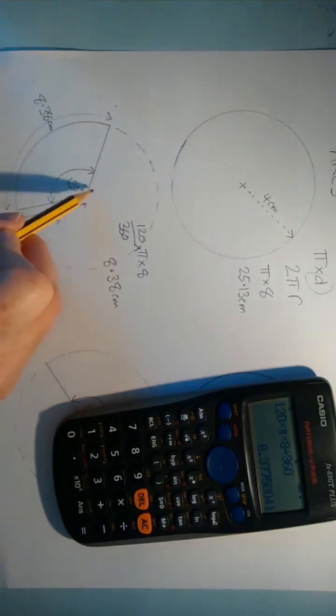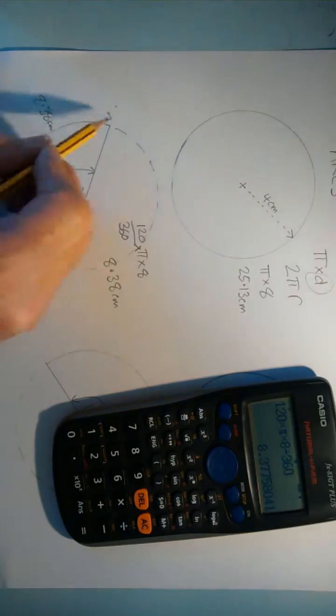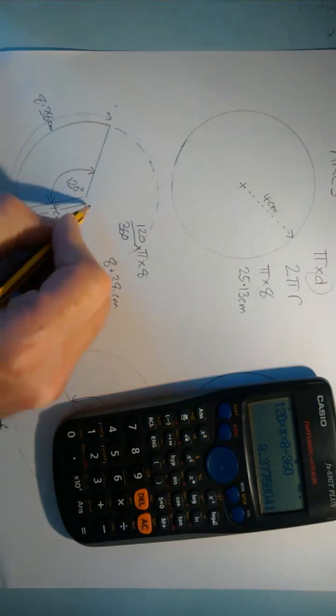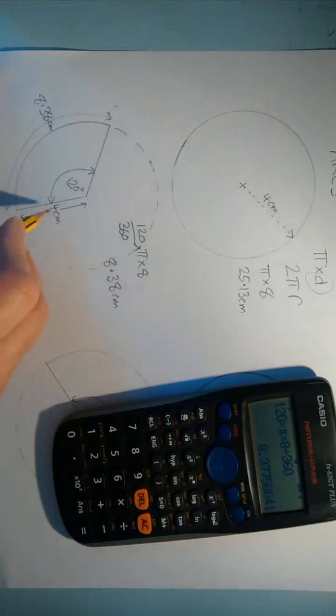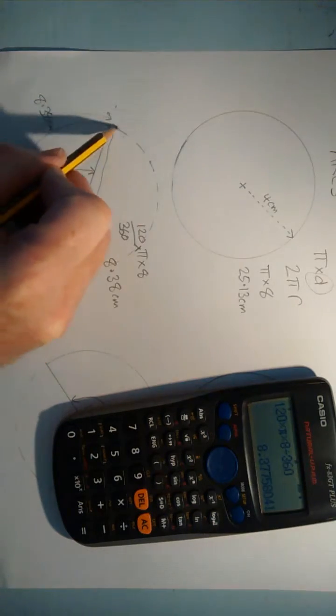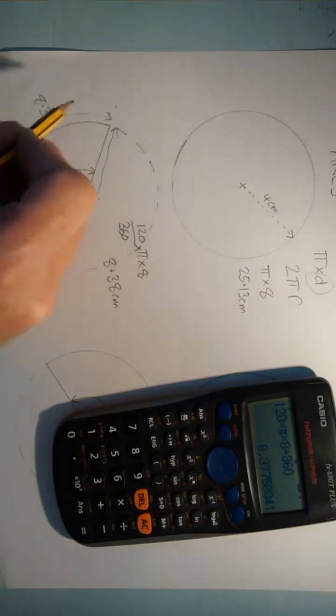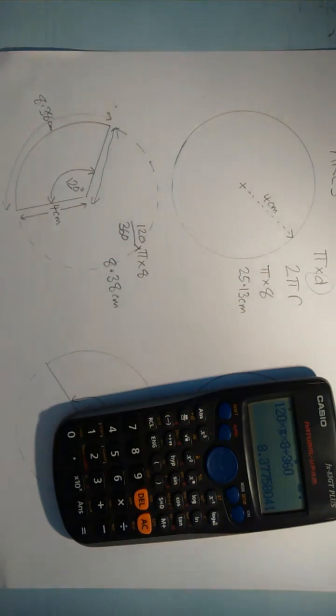Now sometimes they talk about the perimeter of this sector here. Now the perimeter would be that 8.38, plus 4 for this radius here, plus 4 for that radius. So if they talk about the perimeter of a sector, they also want you to add on these two radii here. So that would be 16.38. If they talk about purely the length of an arc, it's 8.38.